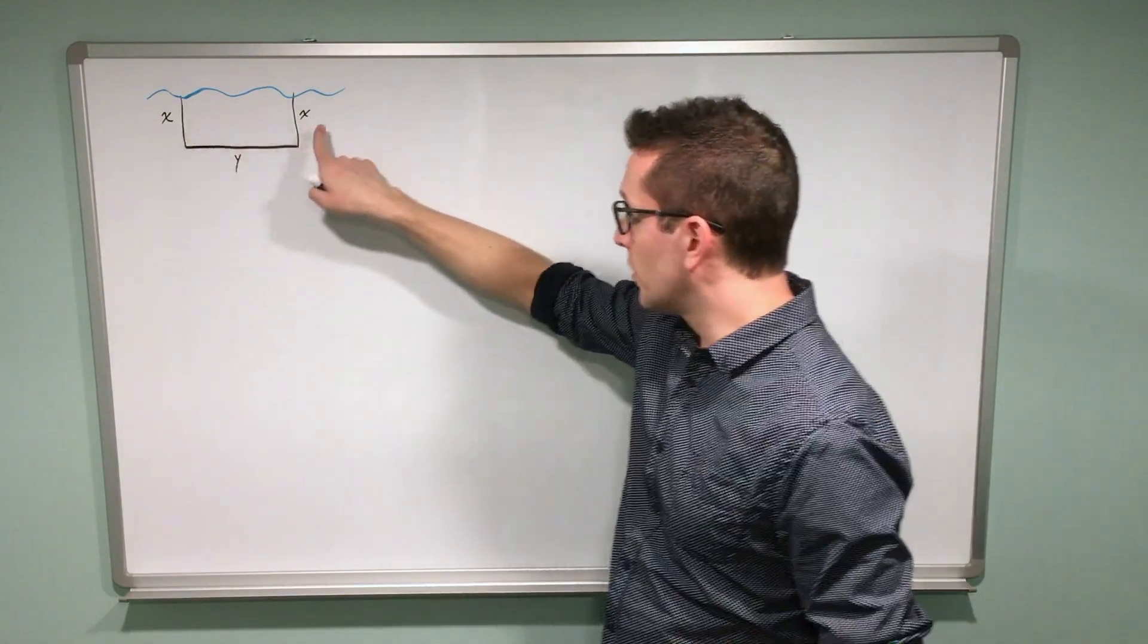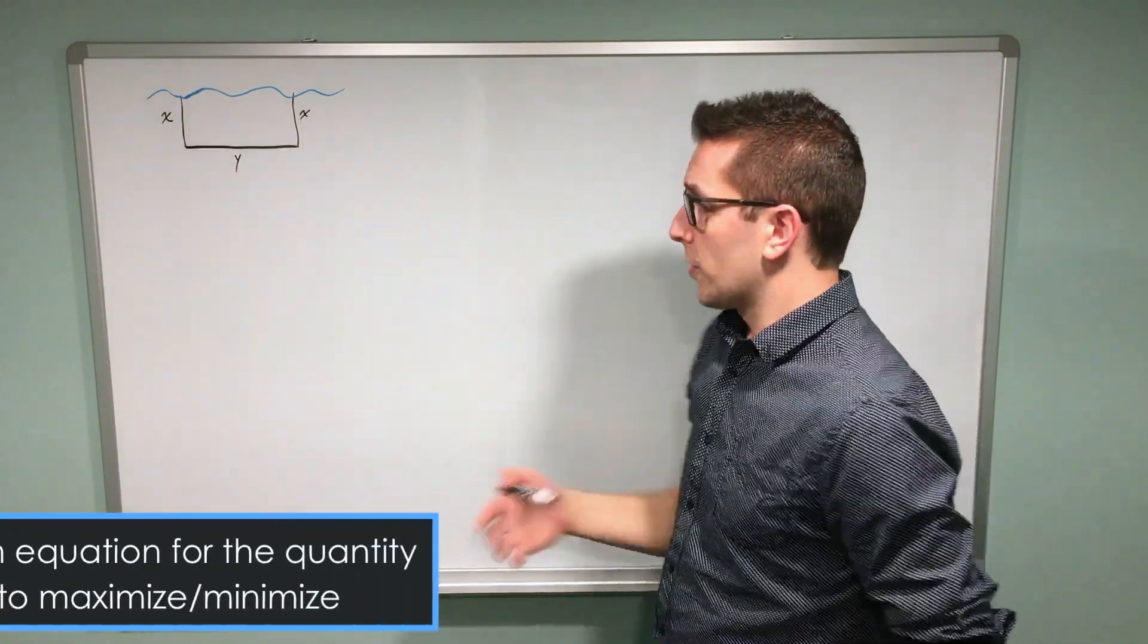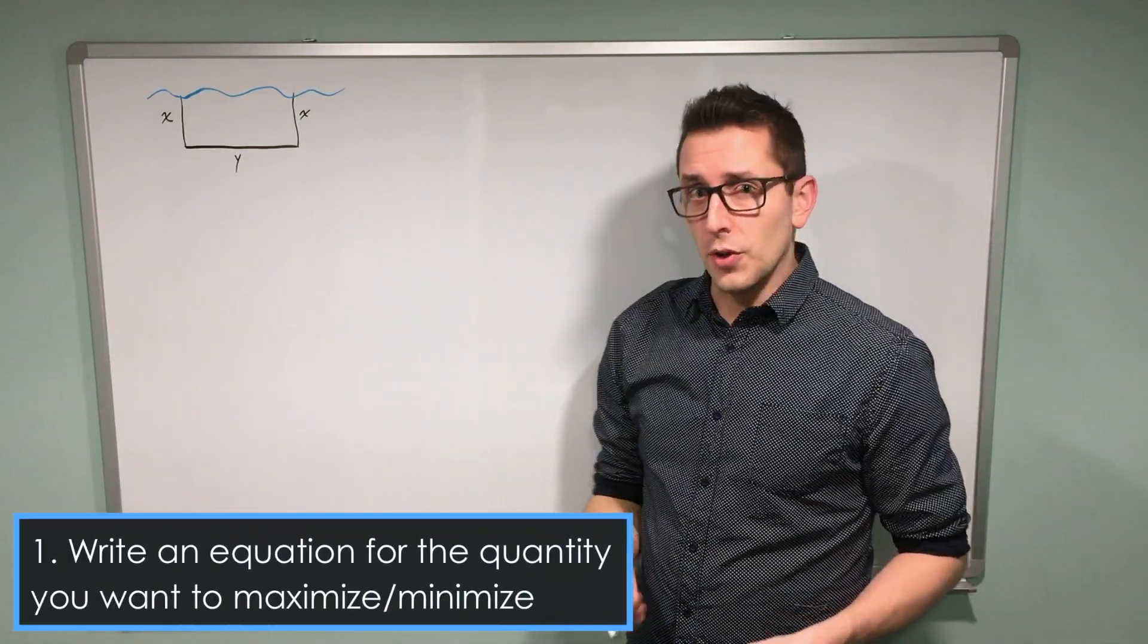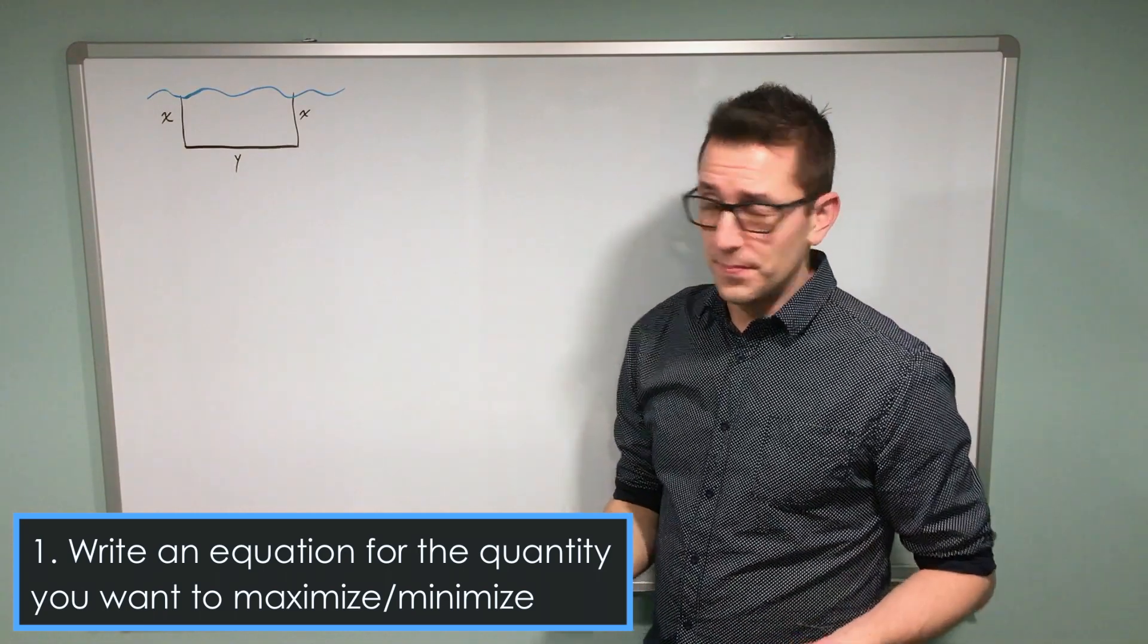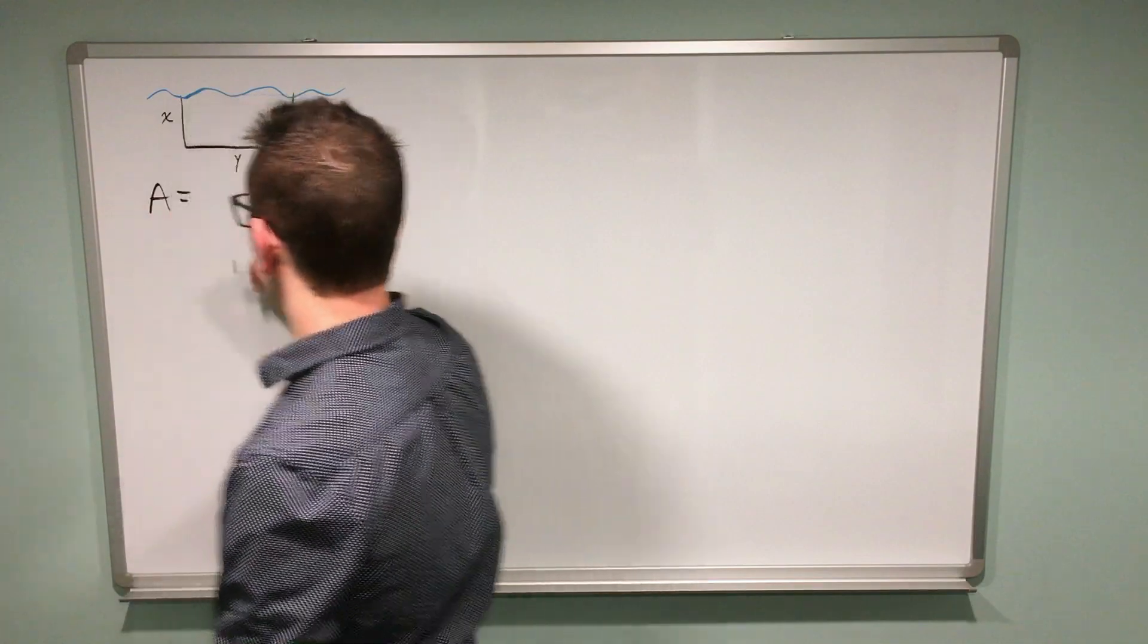So I have two widths, which I've called x, and I've called the length y. I'm going to start by trying to write a formula for the quantity that I'm trying to maximize. In this case, that's area.